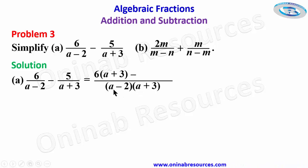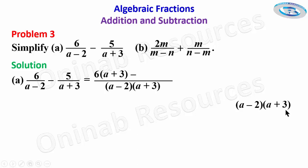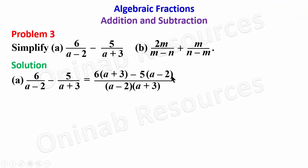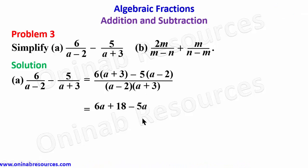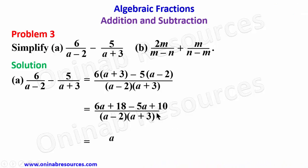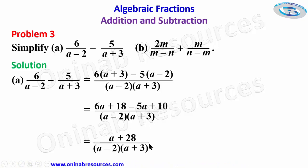The connector is minus. For the second denominator: (a minus 2)(a plus 3) divided by (a plus 3) — (a plus 3) cancels — leaving (a minus 2), which multiplies by 5. So we have minus 5 times (a minus 2). Expanding: 6 times a gives 6a, 6 times 3 gives 18, negative 5 times a gives negative 5a, negative 5 times negative 2 gives positive 10. Simplifying: (6a minus 5a) plus (18 plus 10) gives a plus 28, all over (a minus 2)(a plus 3).